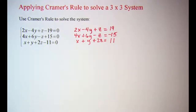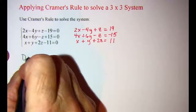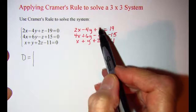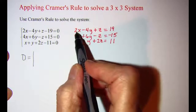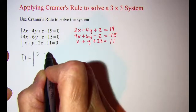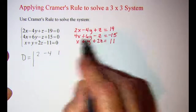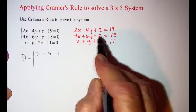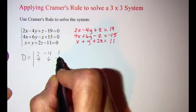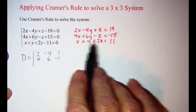Now I'm going to write the determinants that I'll be needing. Determinant D is defined as the determinant that has just the coefficients of the variables. The first row is 2, negative 4, and 1. The second row is 4, 6, and negative 1. The third row is 1, 1, 2.